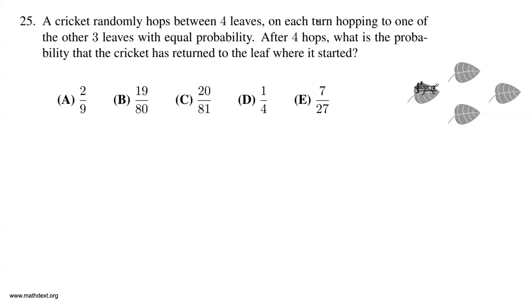A cricket randomly hops between four leaves. On each turn, it hops to one of the other three leaves with equal probability. After four hops, what is the probability that the cricket has returned to the leaf where it started?